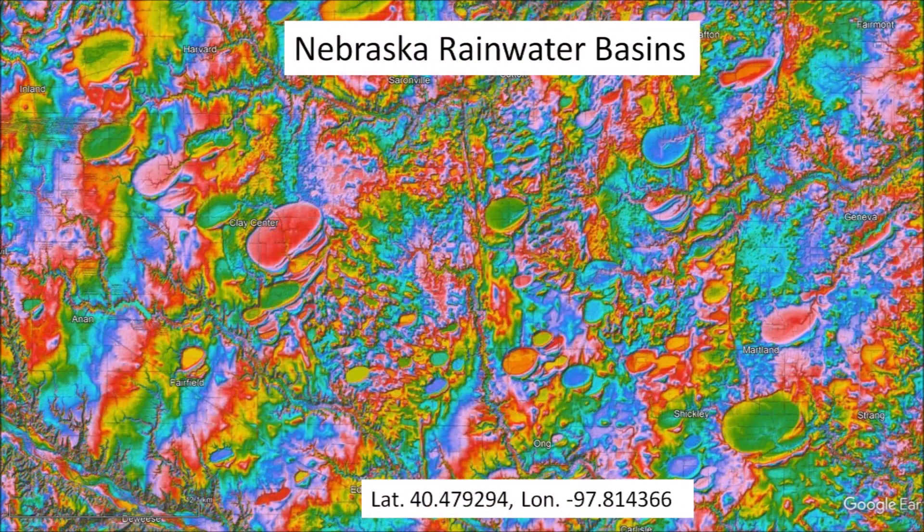This is a LiDAR image of the Nebraska Rainwater Basins. They are located about 520 meters above sea level on ancient sandy deposits from the Platte River. The terrain is relatively rough and erosion has destroyed or deformed many of the basins.